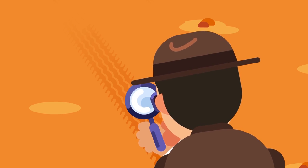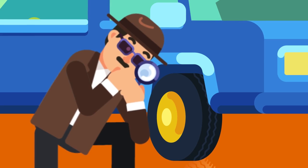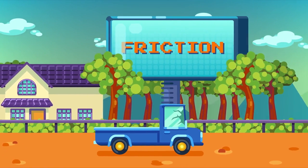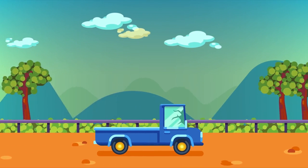Treads. Ever noticed a network of lines on tyres? These are treads. Friction is important to the motion of vehicles. Friction enables the tyre to grip the road surface and roll without slipping.